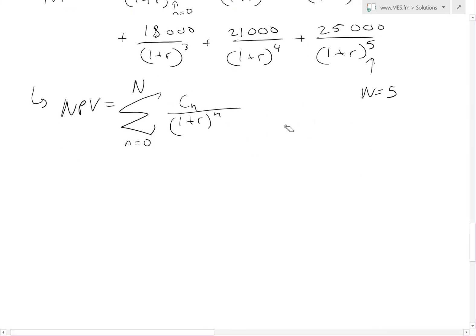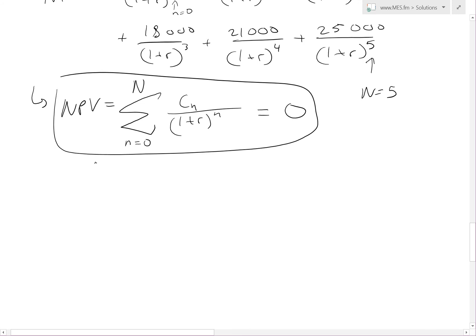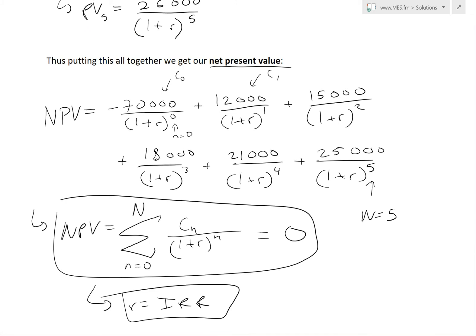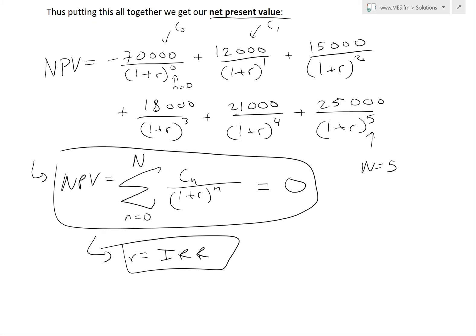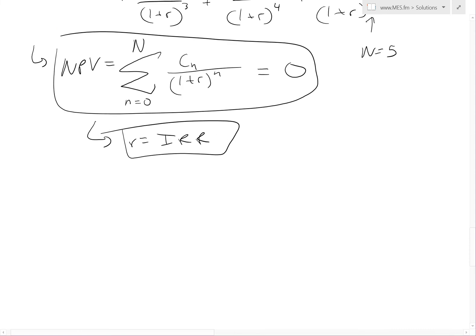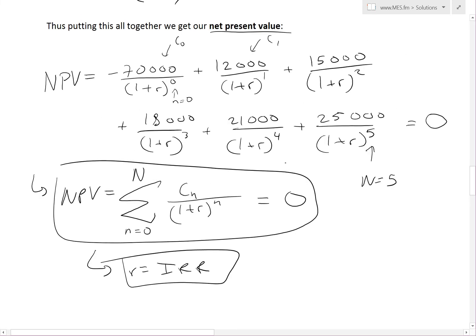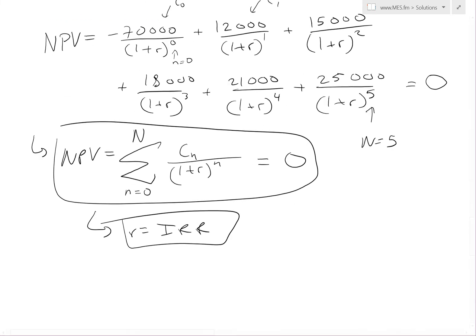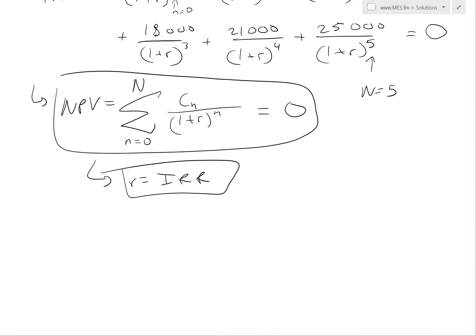Now, all we have to do is set this equal to zero. Setting NPV equal to zero means R equals our internal rate of return. We solve the whole equation for R, and that will give us the IRR. This is hard to solve analytically because it's a complex polynomial equation, so there are numerical methods available.